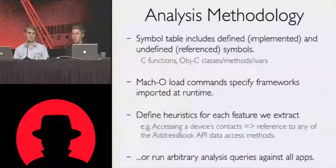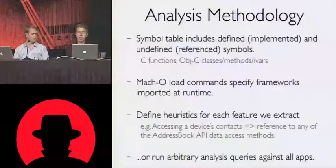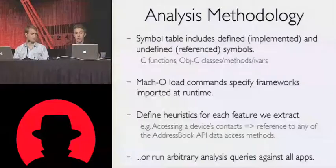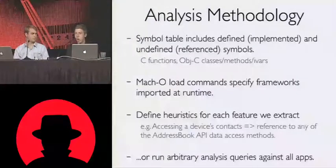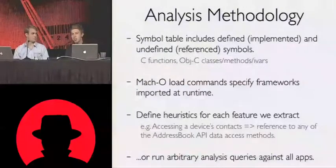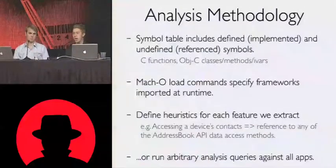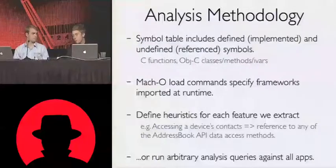Similar to Android, we want to define heuristics to identify features, capabilities, and vulnerabilities. One example of an iPhone heuristic is we can look at whether an application imports any address book APIs that allow you to read contact data. Or we can run arbitrary queries against the application data set as a whole. We're actually able to hit every application on a whole data set in about five hours right now on Android and iPhone and run arbitrary queries against it. That's pretty cool.